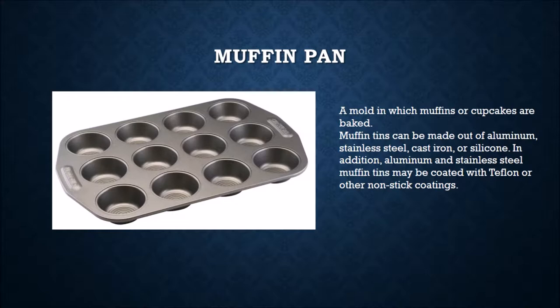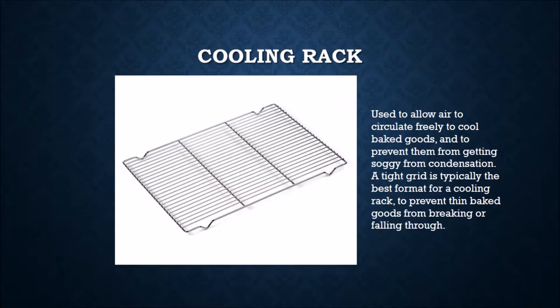A muffin pan is a mold in which muffins or cupcakes are baked. Muffin tins can be made out of aluminum, stainless steel, cast iron, or silicone, and may be coated with Teflon or other non-stick coatings. A cooling rack is used to allow air to circulate freely to cool baked goods and to prevent them from getting soggy from condensation. A tight grid format is typically best to prevent thin baked goods from falling through.